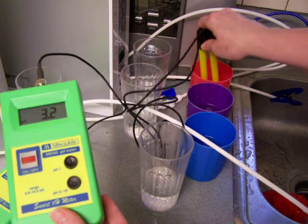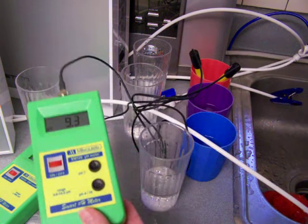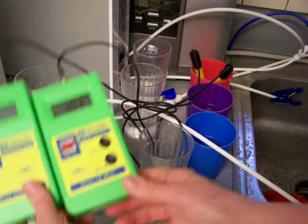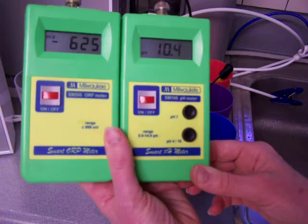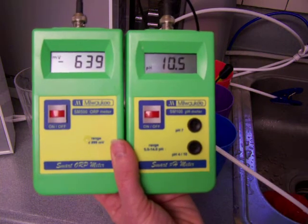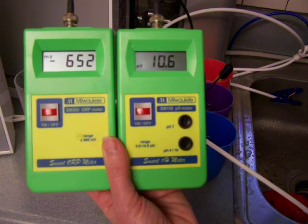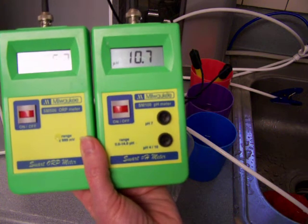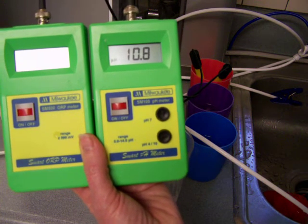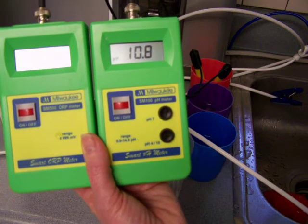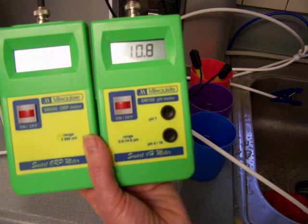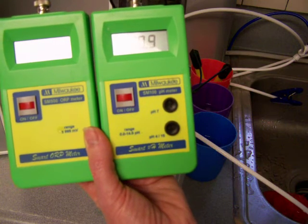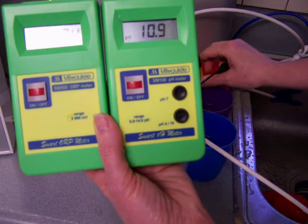Now I'll put it in the alkaline water. I'm also going to turn on the ORP meter at this point. For the Athena, we've got about a 10.5 or 10.6 pH. The ORP is still in that climbing mode. About a negative 690 or possibly a negative 700 on the ORP.